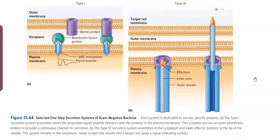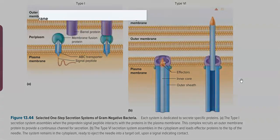ATPase present in the cytoplasm provides energy for the process, and a pilus is also produced. The effect of secretion requires the presence of the host cell — the system attaches to the target cell membrane and traverses the DNA.